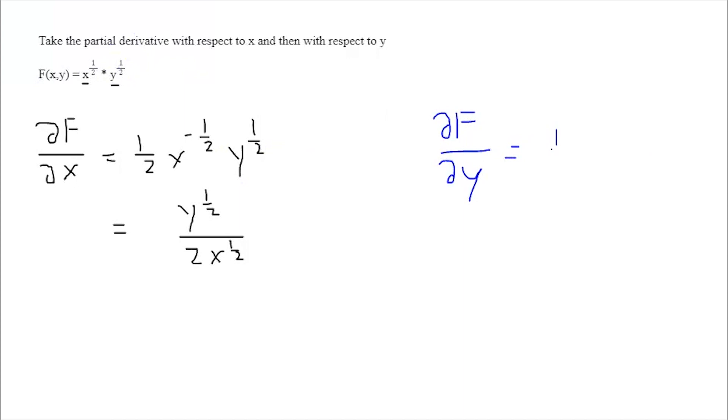We're going to drop down this 1 half, multiply by our new y term by subtracting 1 from our exponent. So we're left with 1 half y to the negative 1 half. And we can't forget to multiply by this x to the 1 half, which again we treat as a constant.